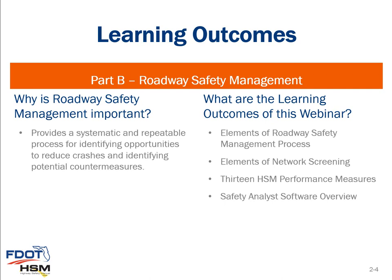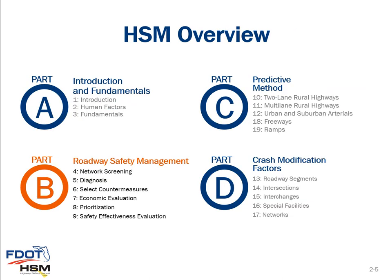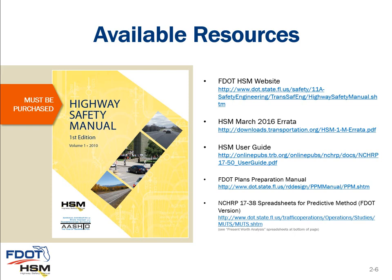The Highway Safety Manual is in four parts. We are addressing today Part B, which is roadway safety management. It has six chapters: the network screening chapter (Chapter 4), Chapter 5 diagnosis, selection of countermeasures, economic evaluation, prioritization, and safety effectiveness evaluation. These are the steps you go through when evaluating a project — screen it, diagnose it, select countermeasures, do the economic evaluation, prioritize, and then conduct an after evaluation. This provides a step-by-step process within the safety management area.